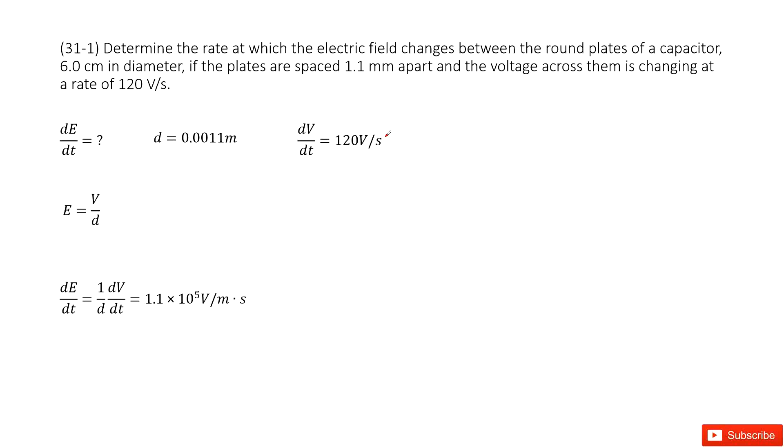So there we can see we have a capacitor, and we need to know the electric field change rate, right? So we can write it as dE over dt. This is what we want to know.